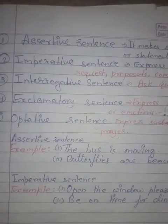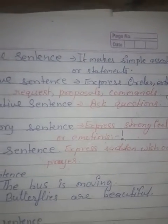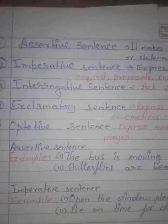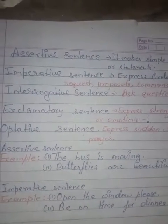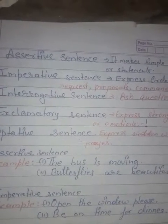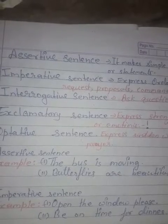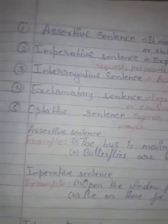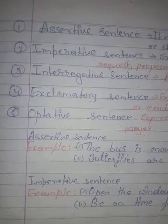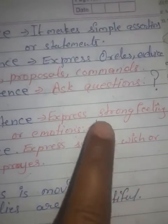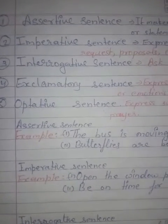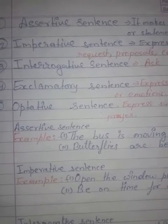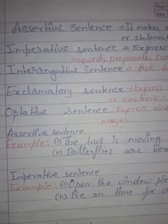The fourth kind is exclamatory sentence — sentences which express strong feelings or emotions such as joy, sorrow, regret, surprise, wonder, etc. An exclamatory sentence is followed by an exclamation mark. The fifth kind is optative sentence — sentences which express a sudden wish, prayer, or desire are called optative sentences.